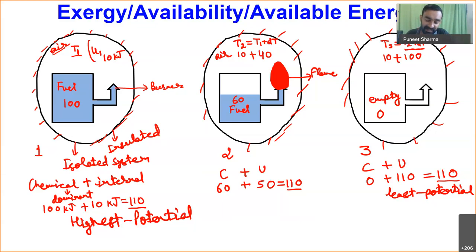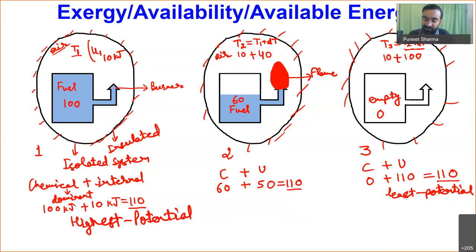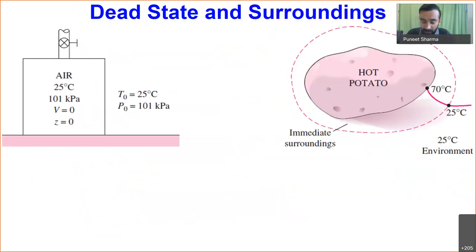Exergy is a parameter which defines the maximum potential of available energy — the maximum potential of work that is available with some source of energy. When studying any source of energy thermodynamically, along with determining the magnitude of energy, we will also quantify the value of exergy associated with that substance.